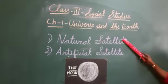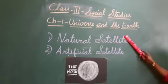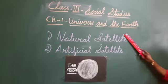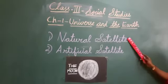You know what is a satellite? Any object which moves around any other object is called a satellite. We have two types of satellites.